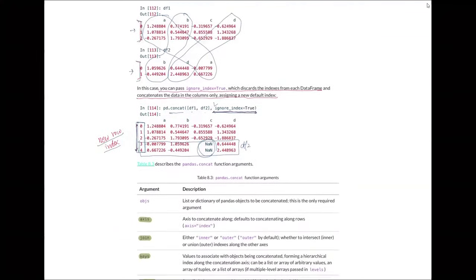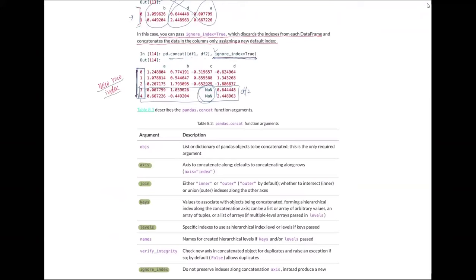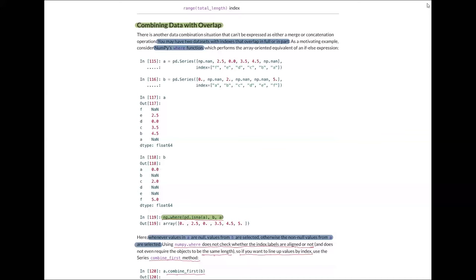That covers the concatenating function. You can check the full table of pandas concat arguments to see everything it can do. Next, we look at combining data with overlap.